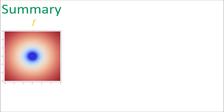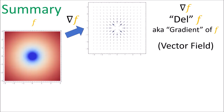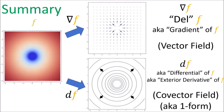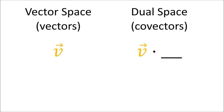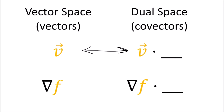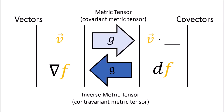To summarize: if we have some scalar field f, then del f or the gradient of f is a vector field where the arrows point along the direction of greatest increase. And df — also called the differential of f or the exterior derivative of f — is a covector field representing the level sets of f oriented towards positive values. Just as we can pair a vector v with a partner covector v dot something, we can also pair the vector field del f with the covector field del f dot something, which turns out to be equal to df. To move back and forth between vectors and their partner covectors we use the metric tensor.